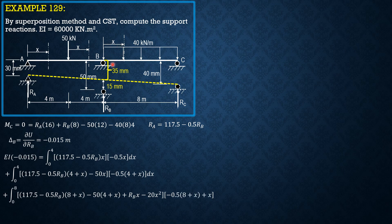The moment of the uniform load contributes the 20x² term. The derivative in this last section is negative 0.5(8+x) plus x, because RB·x is present. Computing: EI times (negative 0.015) equals 60,000 times (negative 0.015), which gives negative 900 on the left-hand side.